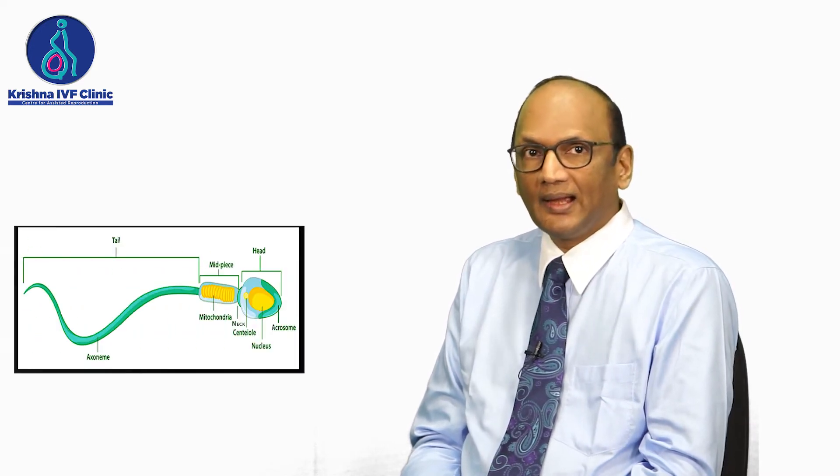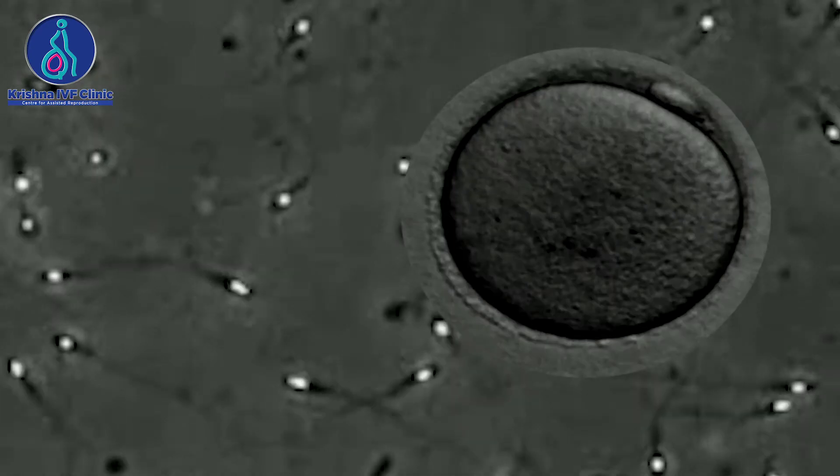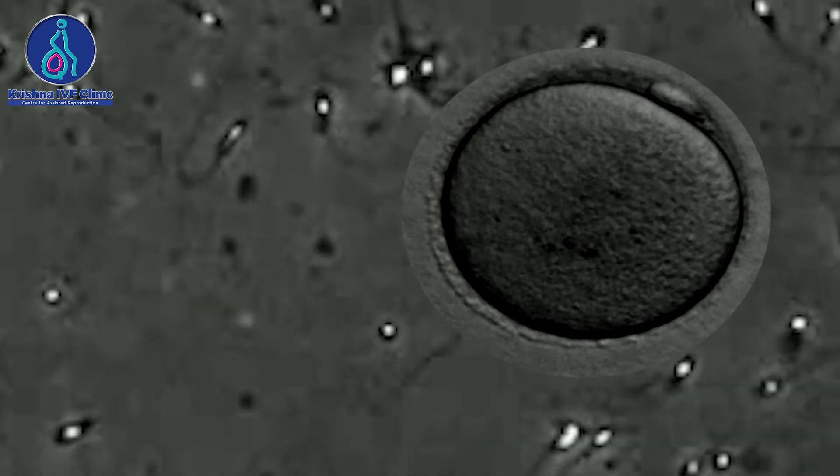A sperm has three components: the head, the neck, and the tail. It is one of the smallest cells in the body, and it is the only cell exposed to different pH and different external environments as it travels from the male body into the female body to meet the egg. So it needs a robust, quality sperm to reach the egg in the fallopian tube and fertilize it.